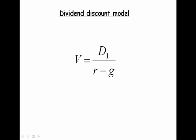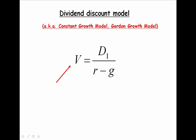The first formula we have is called the dividend discount model, also known as the constant growth model or the Gordon growth model. We use this formula to determine the price or intrinsic value of a share of common stock. In the formula, V represents that value — the intrinsic value.